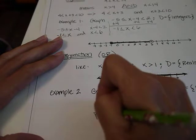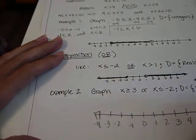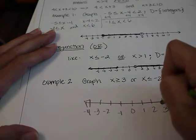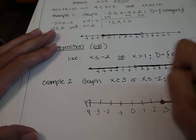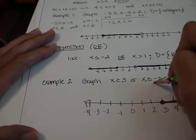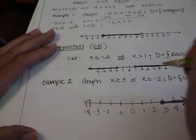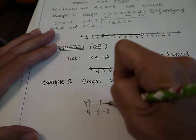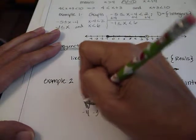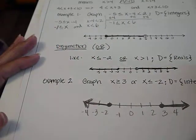Negative 1, negative 2. So x is greater than or equal to 3, and it's inclusive. So that gives us that part of the graph. And x is less than or equal to negative 2. Also inclusive, so it's a solid dot. And it's down here. A disjunction.